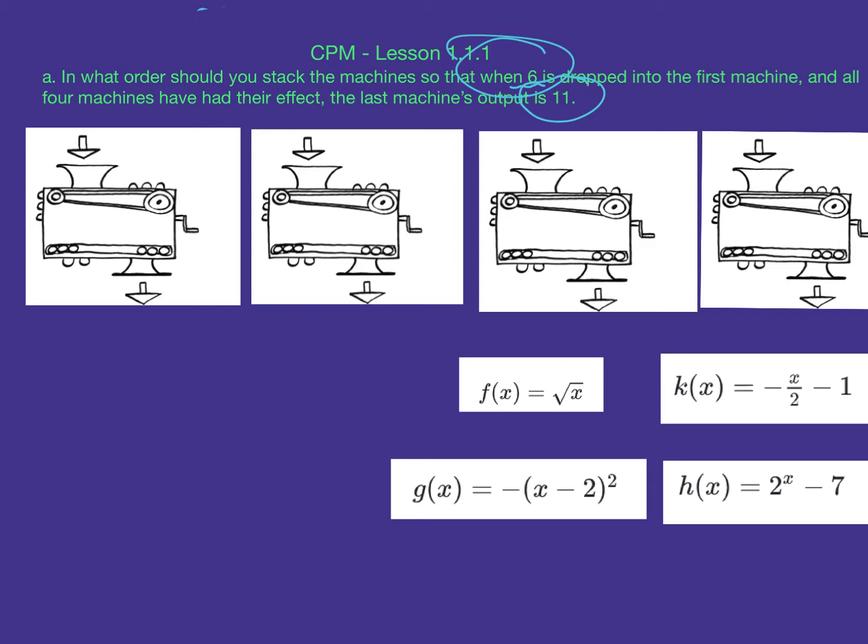My instinct was to go backwards a little bit. I started by looking at the f(x) function. If I get 11 as the answer, that means the input here would have been 121, because f(121) equals the square root of 121, which equals 11. So I had to figure out where I could get 121 from.